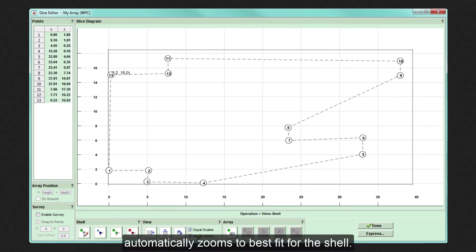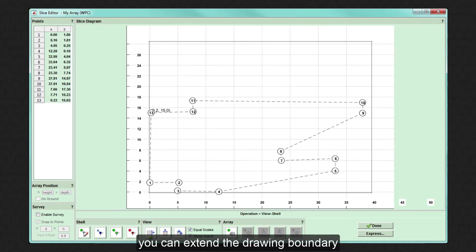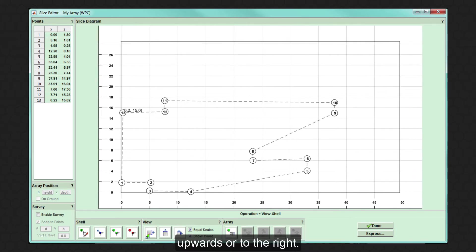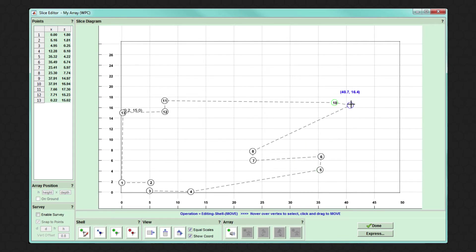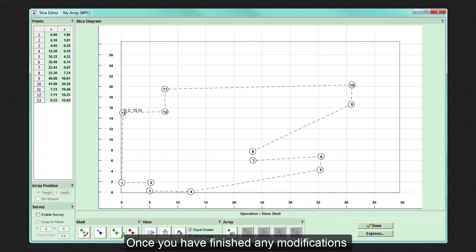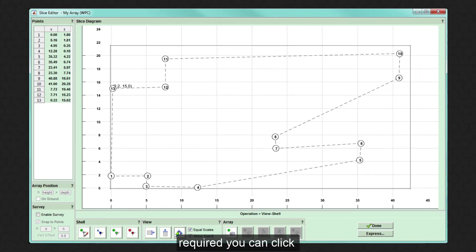If you need to enlarge the shell upwards or make it deeper, you can extend the drawing boundary upwards or to the right. Once you have finished any modifications required, you can click to zoom into the best fit for the shell.